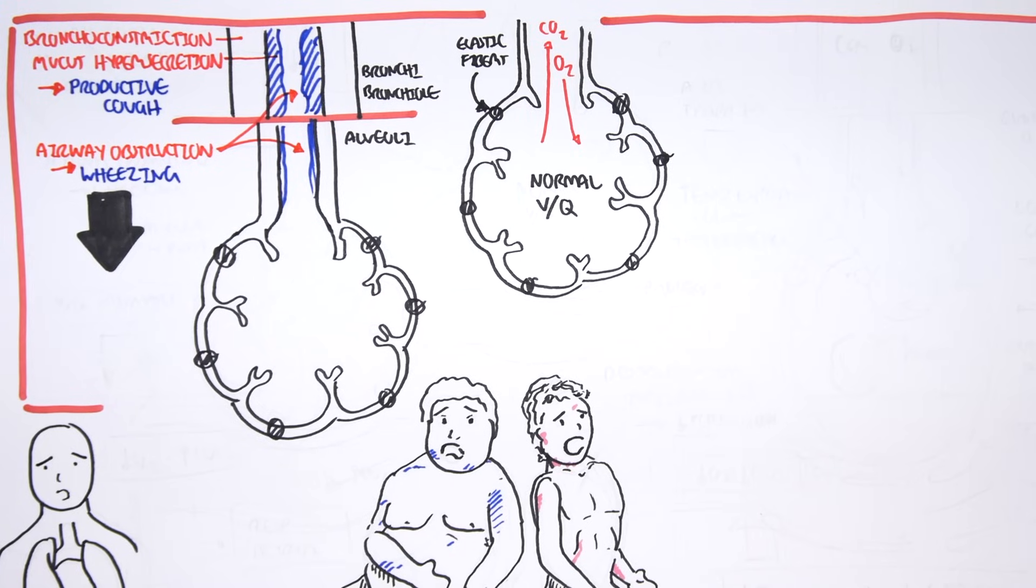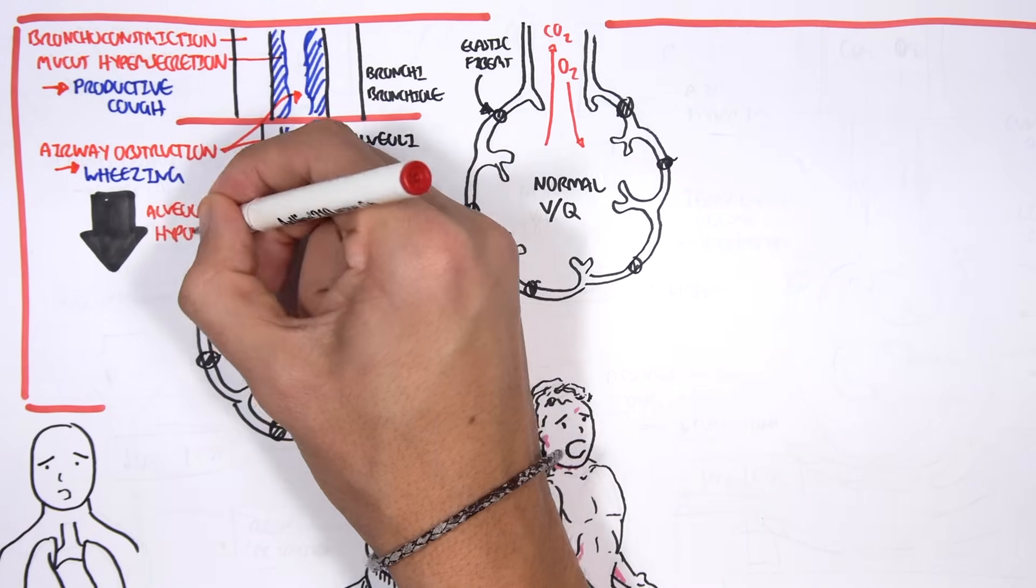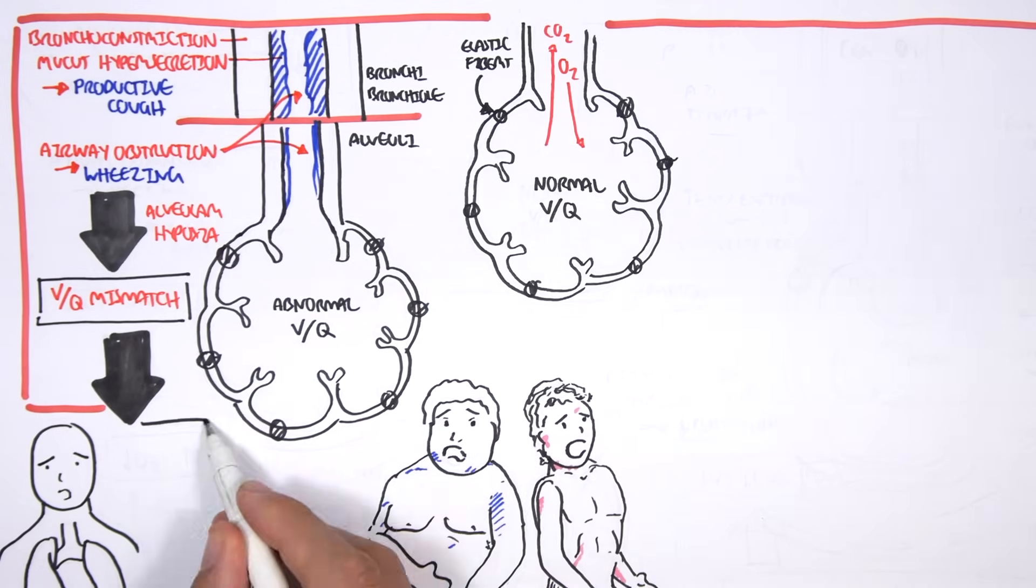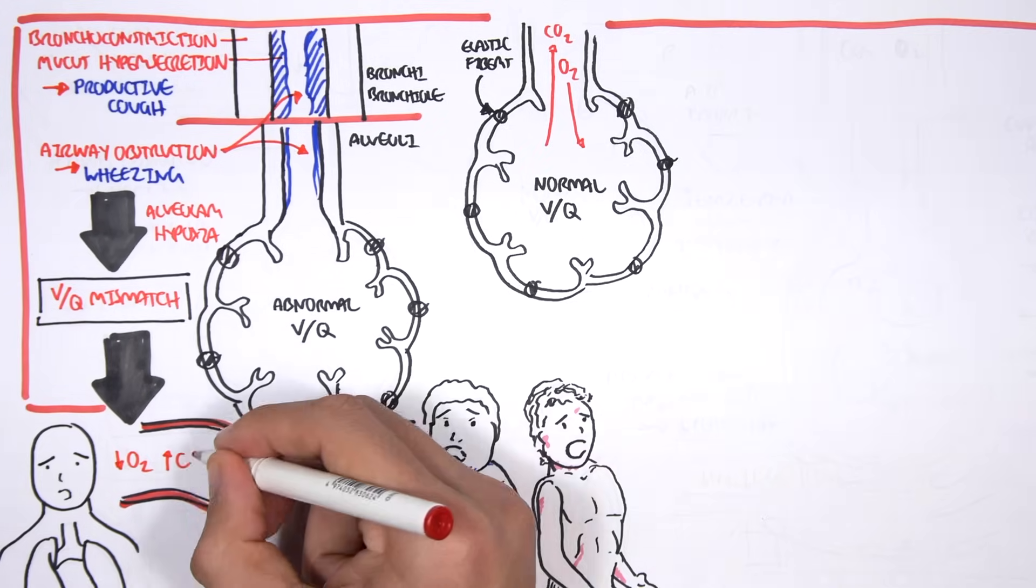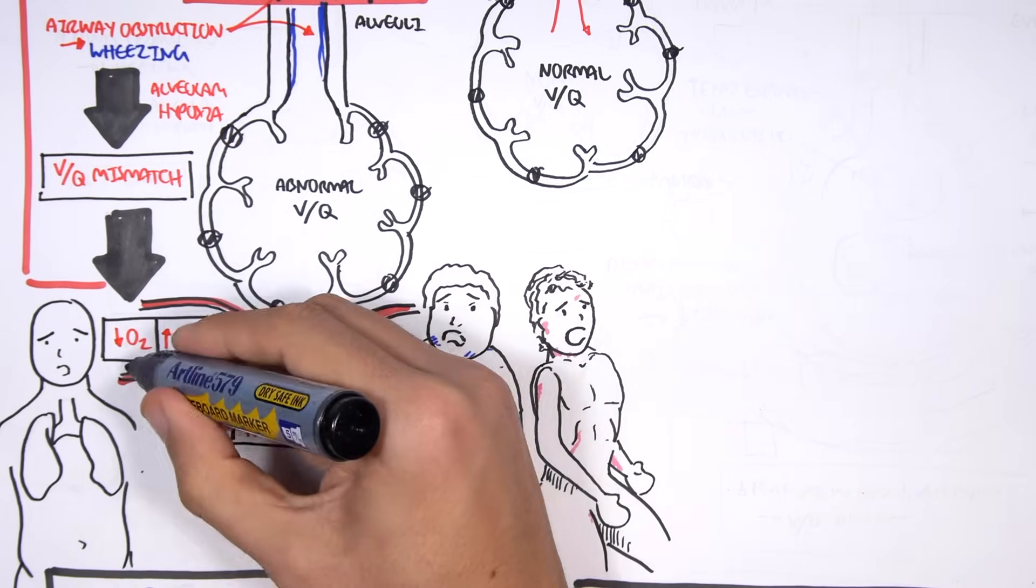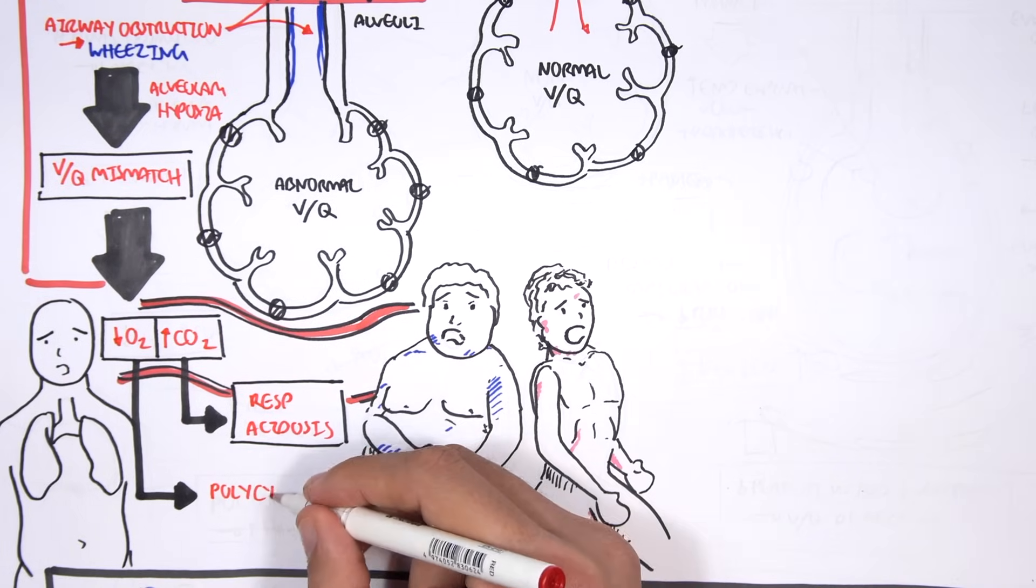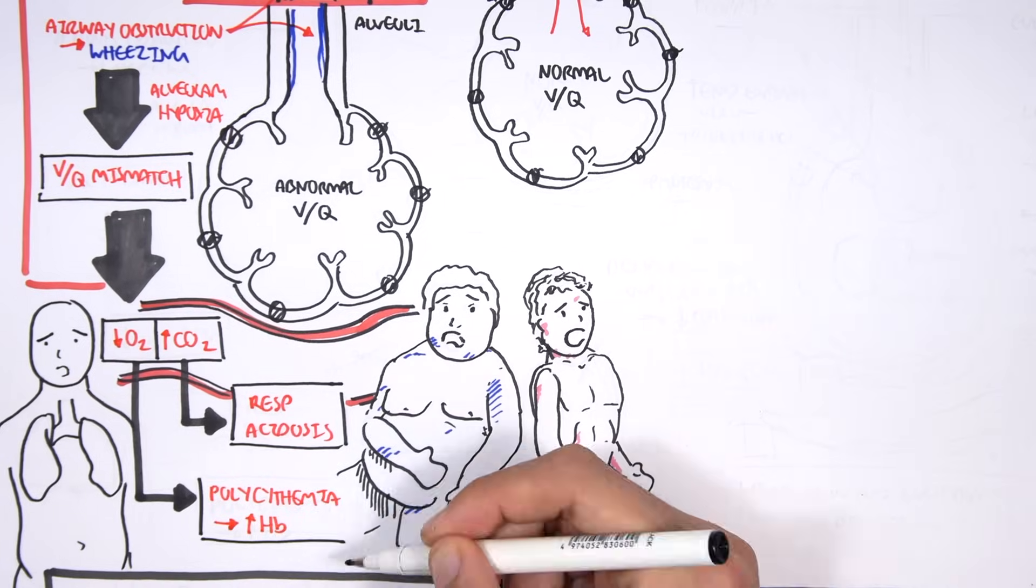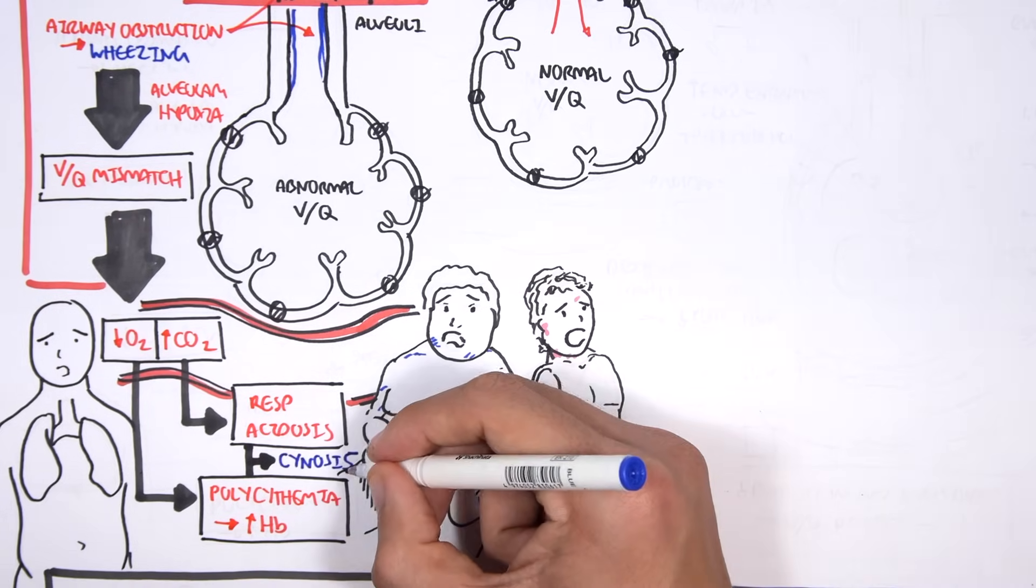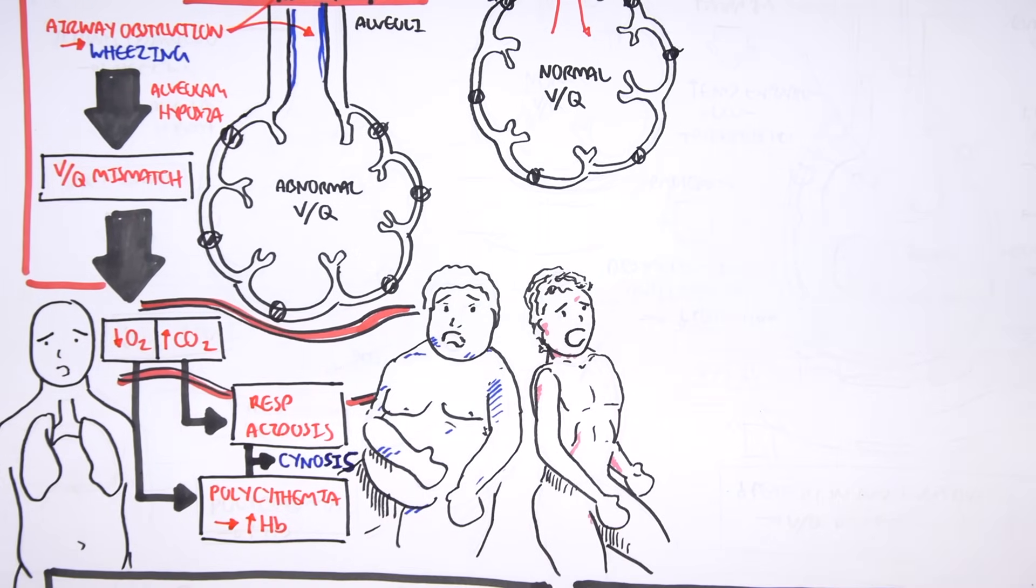When we have airway obstruction, this also can mean that we have alveolar hypoxia because oxygen is not getting through to the alveoli efficiently. This leads to a VQ mismatch. The VQ mismatch leads to hypoxemia and hypercapnia. Hypercapnia means respiratory acidosis. A decrease in oxygen in the blood means the body will try to make more red blood cells to compensate. This is known as polycythemia where we get an increase in hemoglobin. The respiratory acidosis and polycythemia with the decrease in oxygen contributes to cyanosis, the blue color, and this is why these patients with chronic bronchitis are known as the blue bloaters.